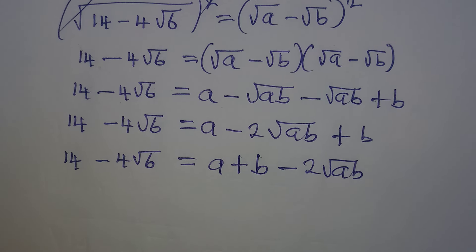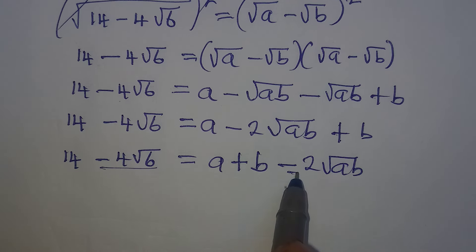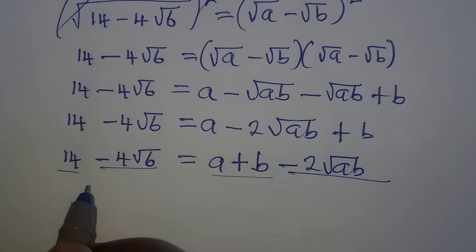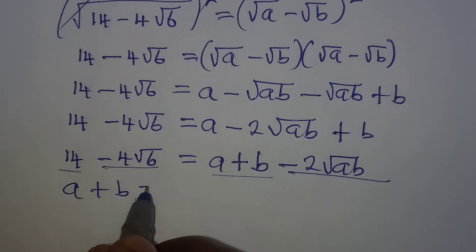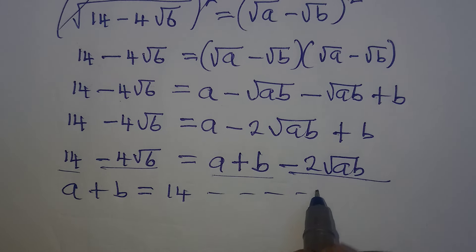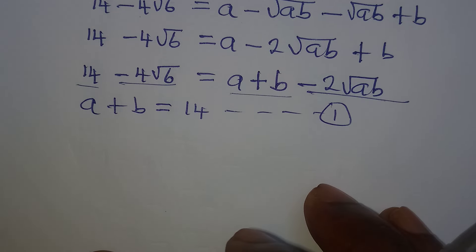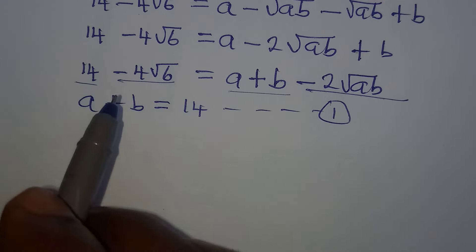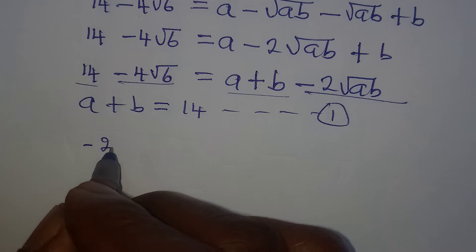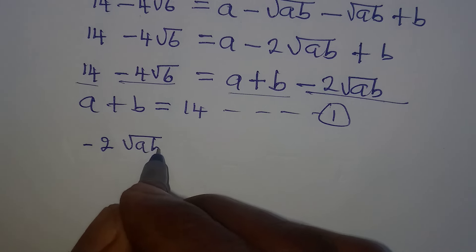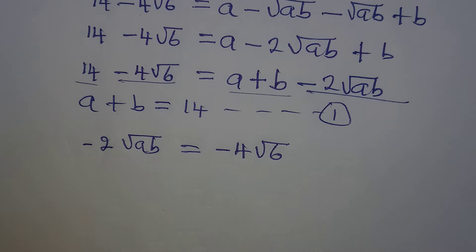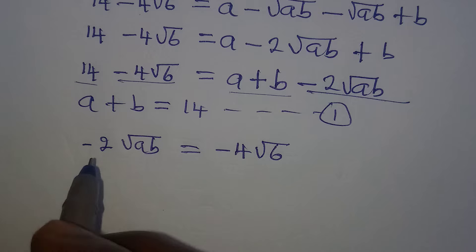From here we can begin to make our comparison, because the whole of this should match each part. So a and b should correspond to the rational and irrational parts. We can conclude that a plus b is definitely equal to 14, and this becomes our first equation. Then to get the second equation, we compare the irrational parts: minus 2√(ab) equals minus 4√6.